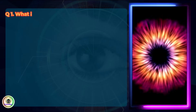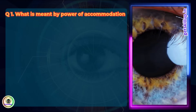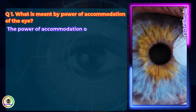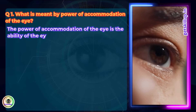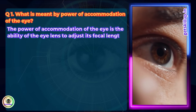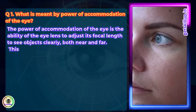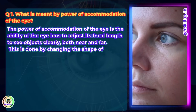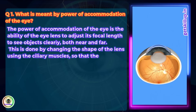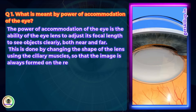Question 1: What is meant by Power of Accommodation of the Eye? The power of accommodation of the eye is the ability of the eye lens to adjust its focal length to see objects clearly, both near and far. This is done by changing the shape of the lens using the ciliary muscles so that the image is always formed on the retina.